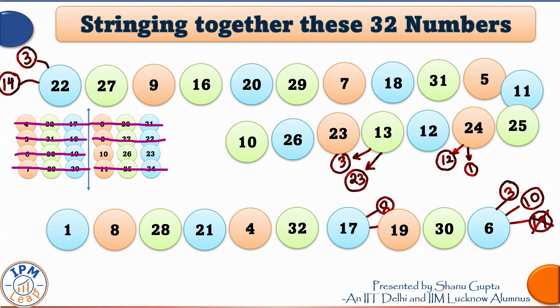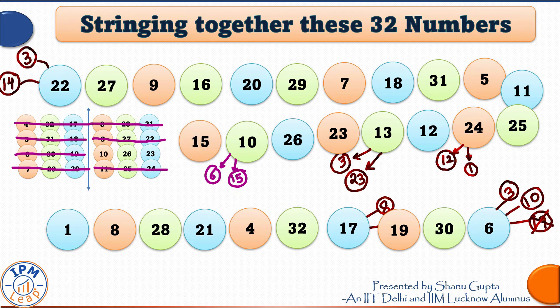Over here, 10 can be followed by 6 or by 15. Let me choose 15. And 15 can be followed only by 1 or 21. But 21 we see right in the middle of this string. So, it's not possible. 15 will be followed by 1.